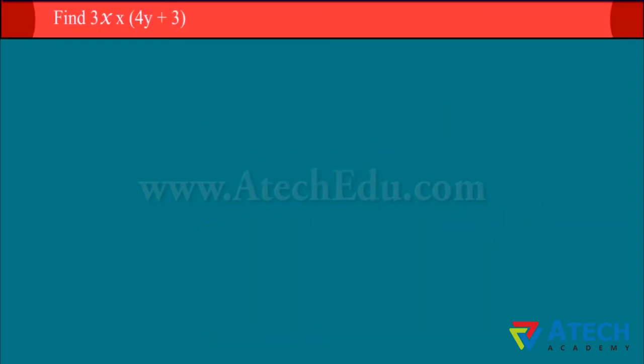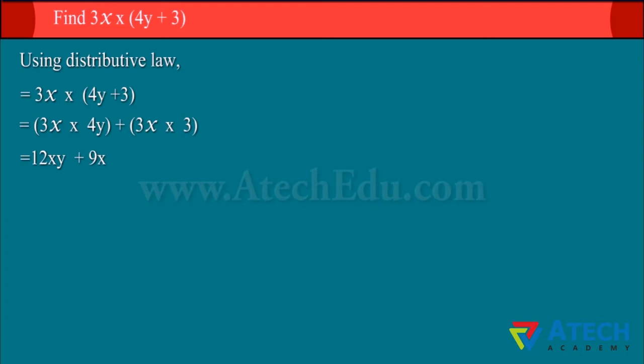Let us multiply the monomial 3x by the binomial 4y + 3. Using the distributive law, we can solve easily and we get 12xy + 9x, which is a binomial.